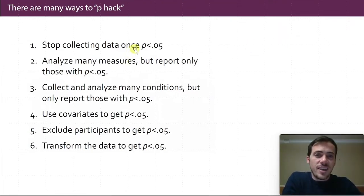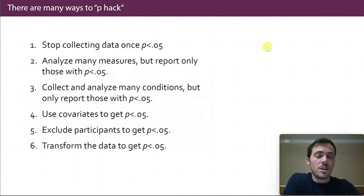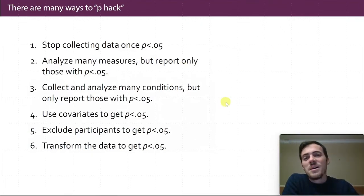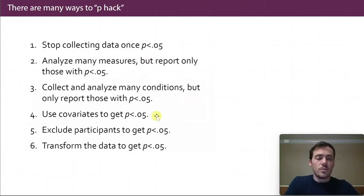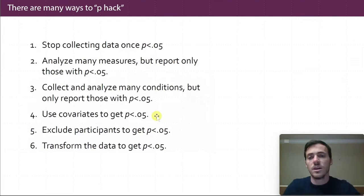They'll collect data, but the second that they have a p-value over the threshold, they'll just stop collecting data. They will analyze many measures but report only those that have p-values greater than 0.05. Sometimes they had a bunch of hypotheses, and let's say 9 out of 10 resulted in p-values less than 0.05, but then they only report the one that did. They will use covariates — things that are correlated with one another. Maybe obesity is correlated with height, and really it's height that's the reason why people get the disease, but they'll report obesity. Or they will exclude participants or transform their data. These are all bad — you would never do any of these things.